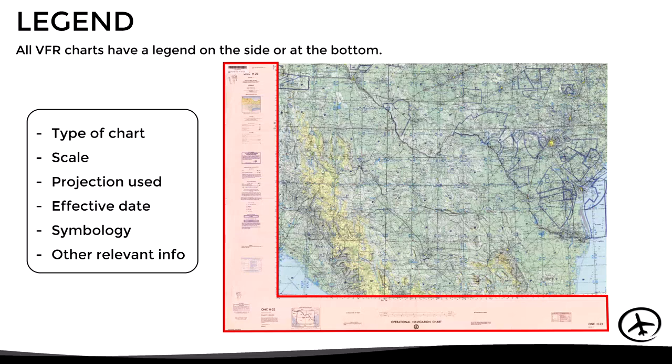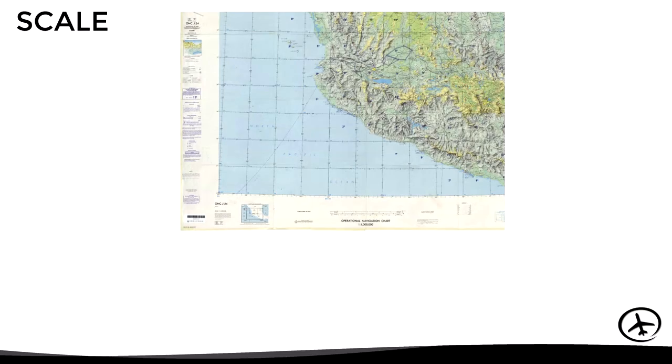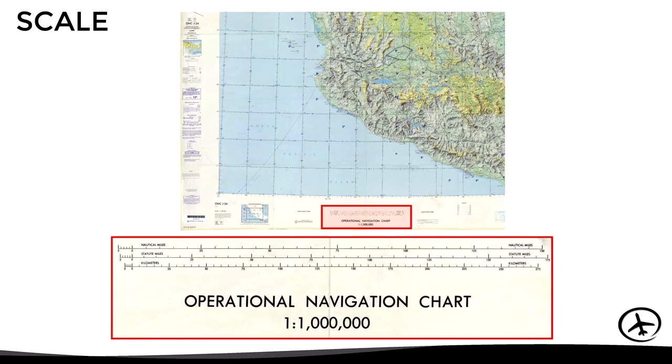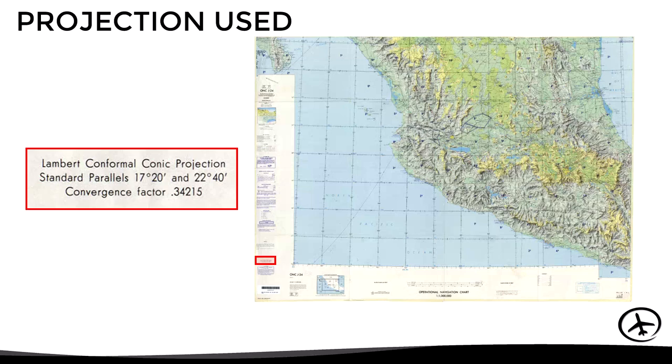The type of chart specifies if it is a terminal, sectional, world, or operational chart and also includes its identification number or name. In this example, this is the operational navigation chart J24, which covers part of Mexico. Then the scale of the chart is specified. In this particular example, we can see a graphic scale in kilometers, nautical and statute miles, and also a numerical scale that specifies that it is 1 in 1 million.